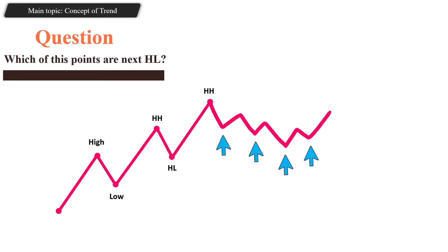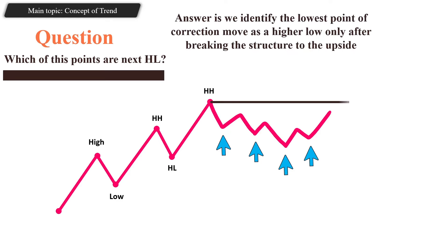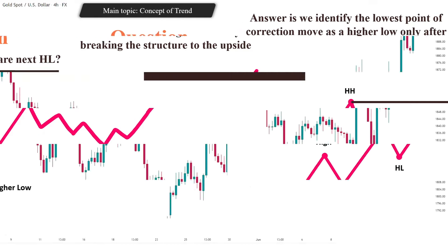We identify the lowest point of a correction move as a higher low only after breaking the structure to the upside. In the case of a lower high, breaking it to the downside can signal a possible trend change. The same logic applies in a downtrend.